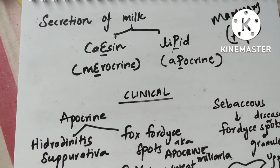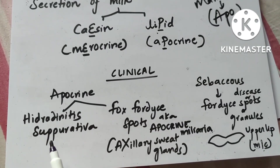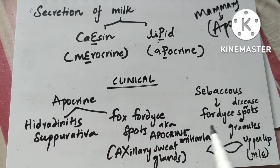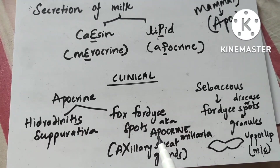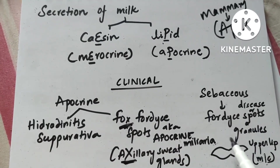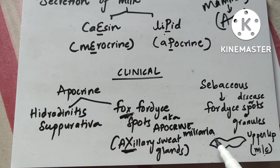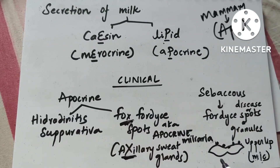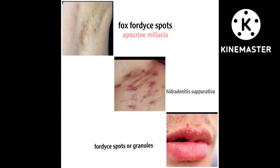When they ask a question about mammary gland type, your answer should be apocrine. But when they ask about the secretion of milk, then it is merocrine plus apocrine gland. Clinical correlations from Dermatology: three diseases — hidradenitis suppurativa, Fox-Fordyce spots or apocrine miliaria (in the axillary sweat glands — remember Fox-Fordyce has X in it, and axillary has X in it), and Fordyce spots, which occur most commonly on the vermilion border of the upper lip and are from the sebaceous glands. These three are the clinical correlations you need to know from this topic.